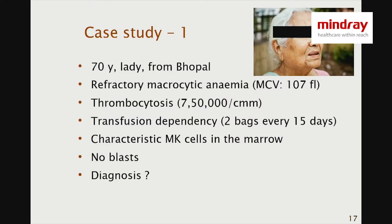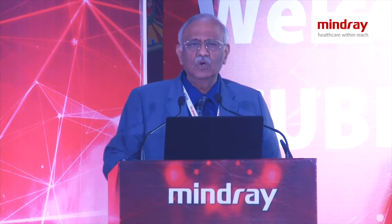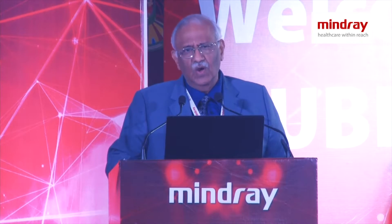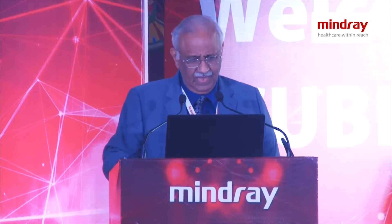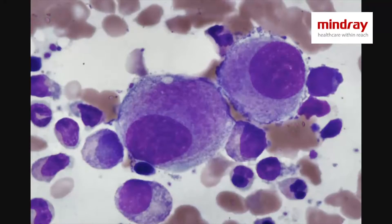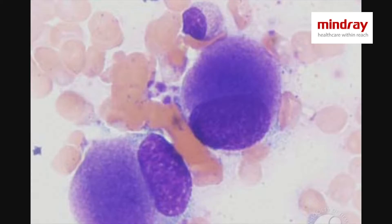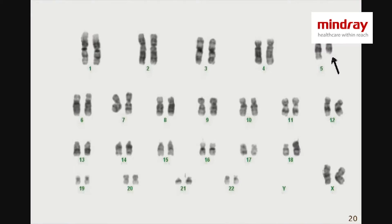The first case is a 70-year-old lady from Bhopal. She has a refractory macrocytic anemia, a high platelet count, and is transfusion-dependent. She has a diagnostic megakaryocyte in the marrow and there are no blasts. This is the characteristic megakaryocyte which has a nucleus that is hypo-lobated and eccentrically placed.